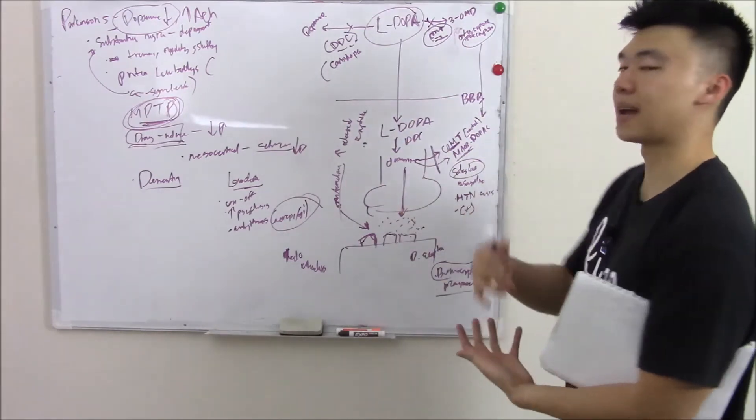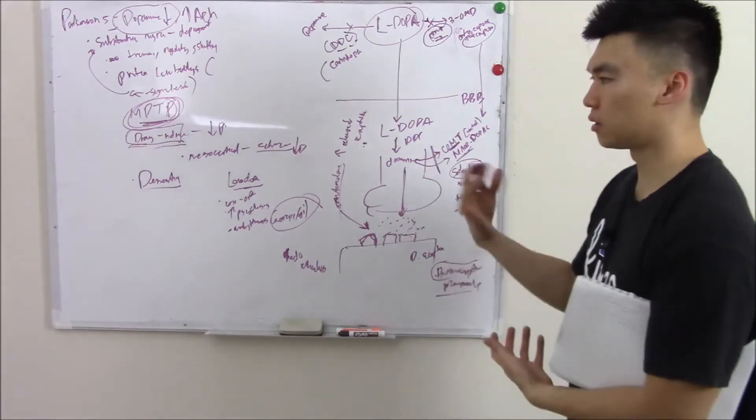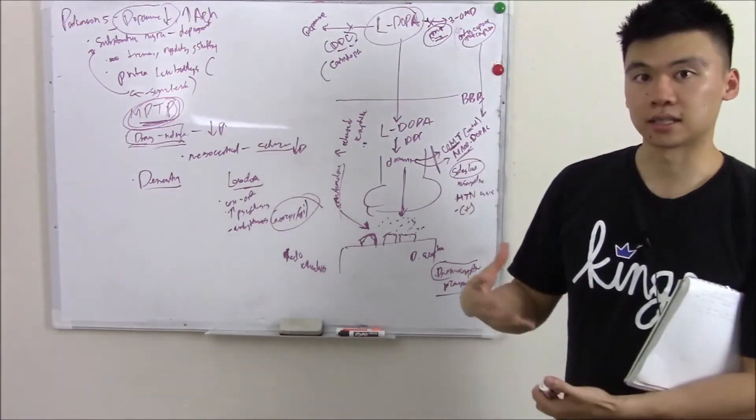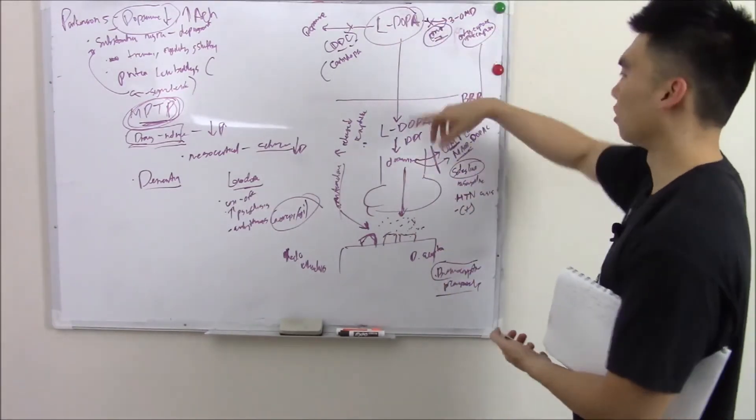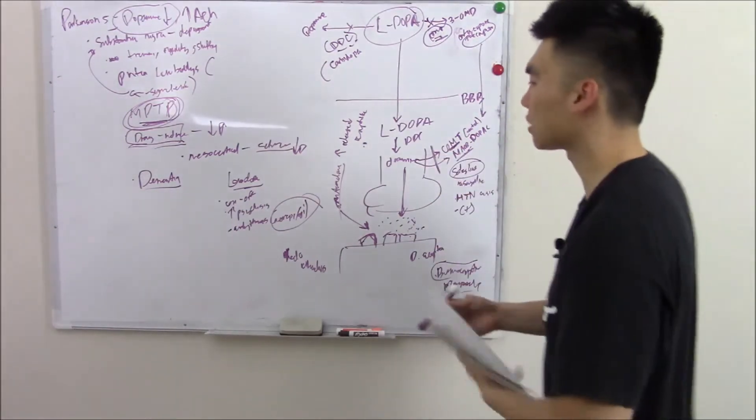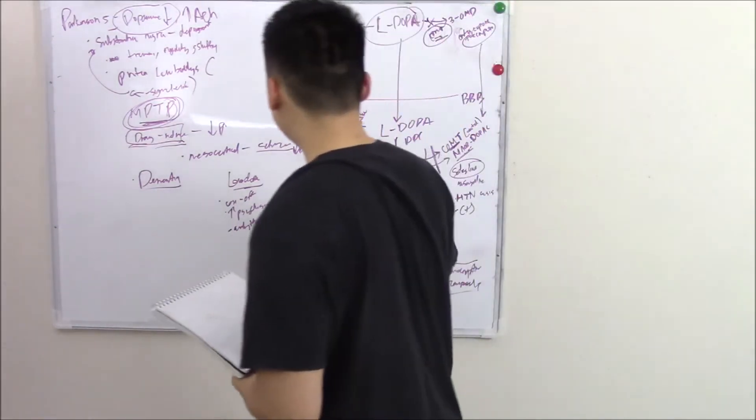That is the pharmacology of Parkinson's. Hope that clears things up. Whenever you're doing pharmacology, always have the mechanism. And then it's very easy to understand the drugs because you can just list, oh, it works here and it does this. It's very easy to visualize.